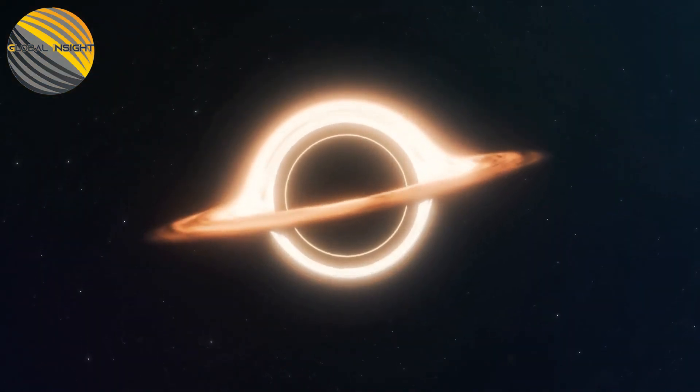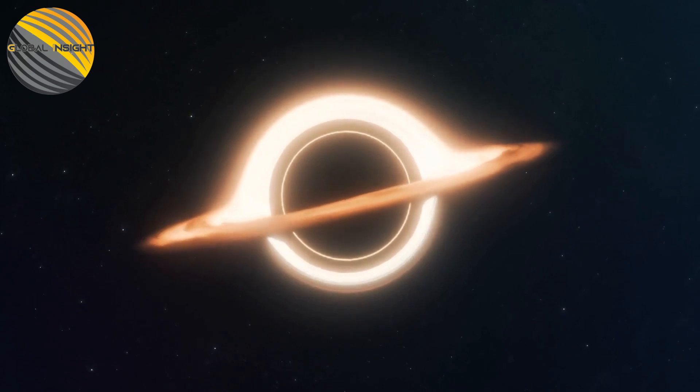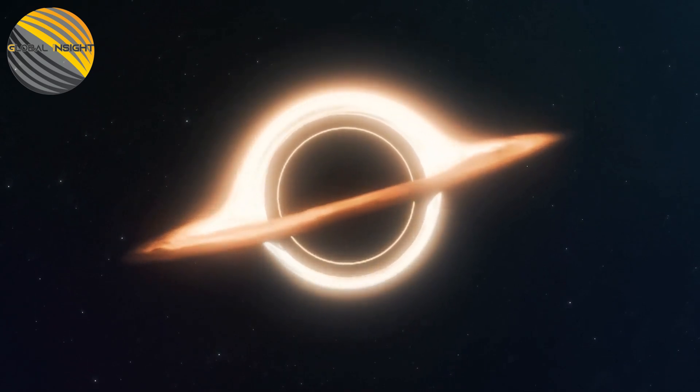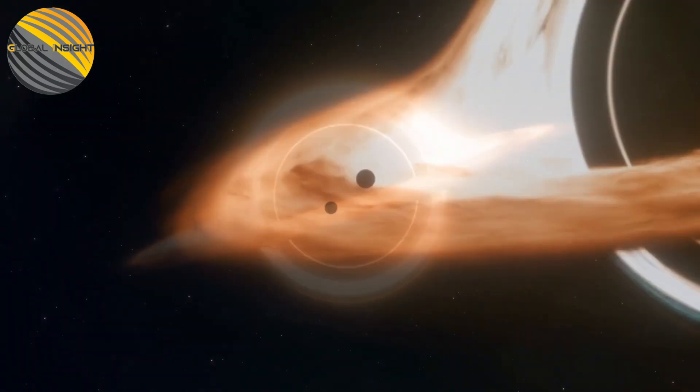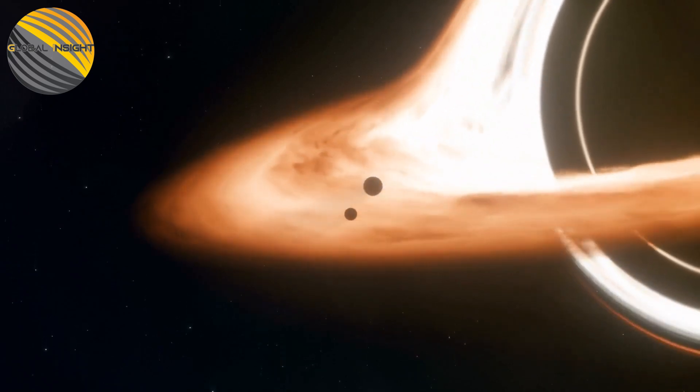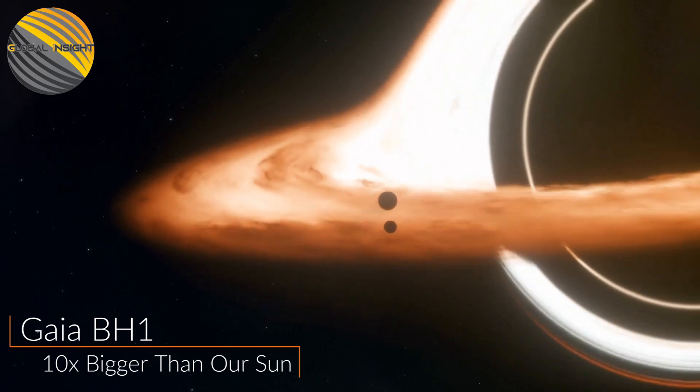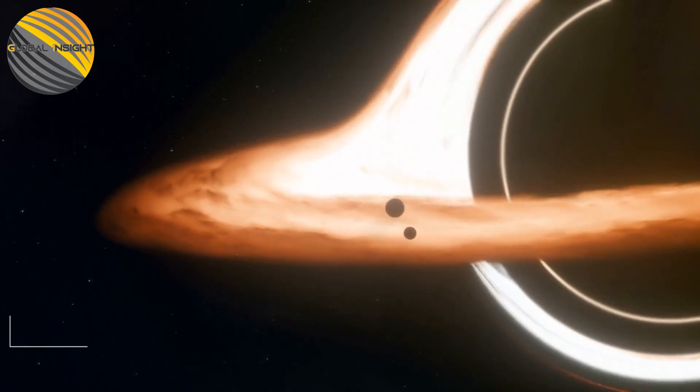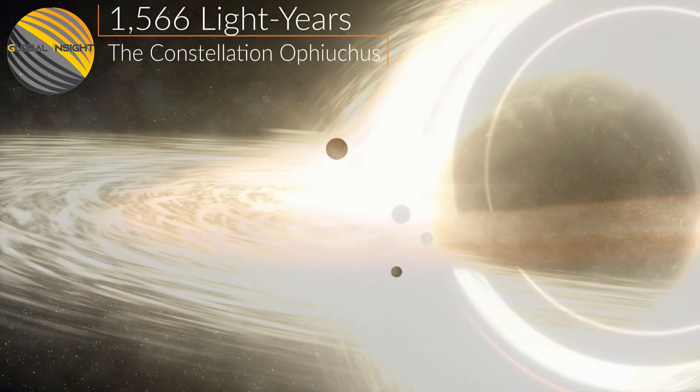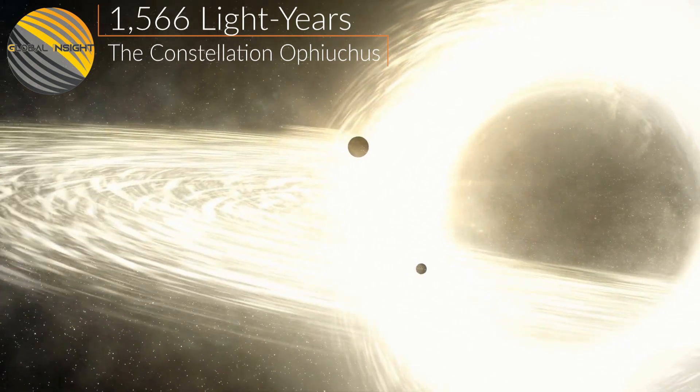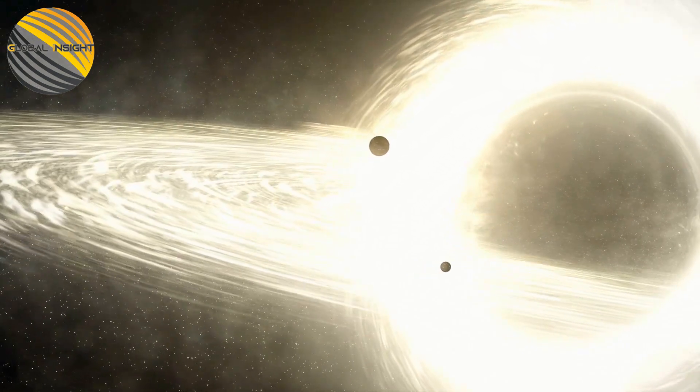Well, the nearest known black hole to Earth has been discovered by experts, and it's two times as close as the black hole that was previously thought to be the closest. The space-time singularity known as Gaia BH1 is approximately 10 times as massive as our Sun and is 1,566 light-years away in the constellation of Ophiuchus.